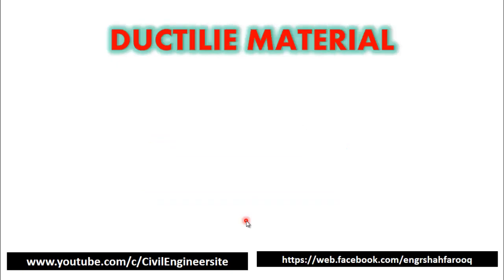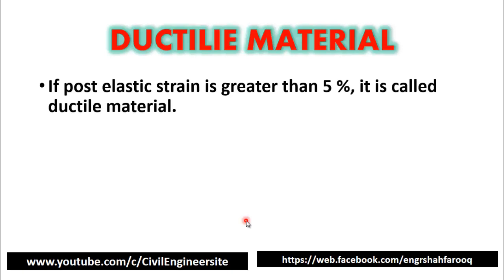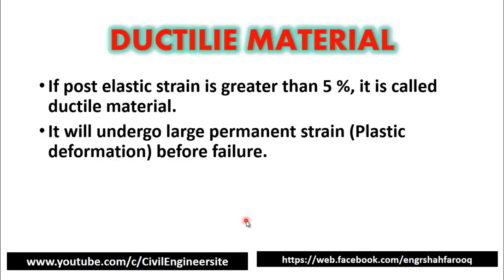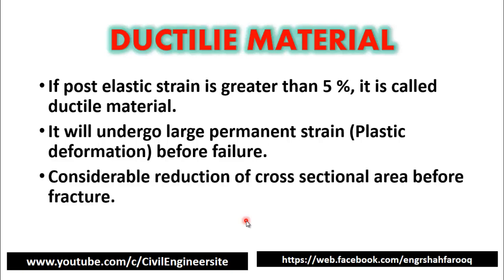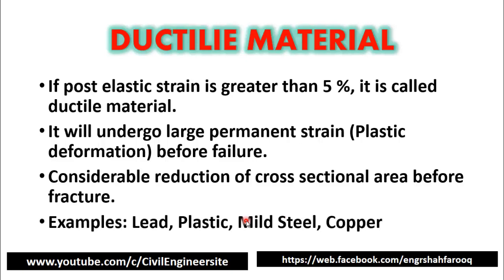Now we will discuss how to determine whether a given material is ductile or brittle. If the post-elastic strain or deformation is greater than 5%, it is called a ductile material. Ductile material will undergo large permanent strain or plastic deformation before failure, with considerable reduction of cross-sectional area before fracture. Examples of ductile materials are lead, plastic, mild steel, and copper.